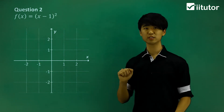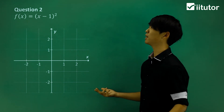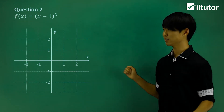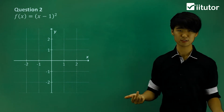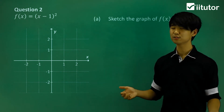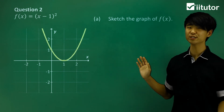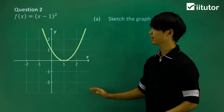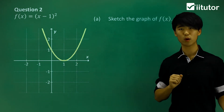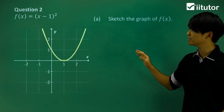Moving on to question 2, we have another parabola, but it's translated a little differently. In part A, we sketch it — it's going to be a parabola shifted to the right by one unit.